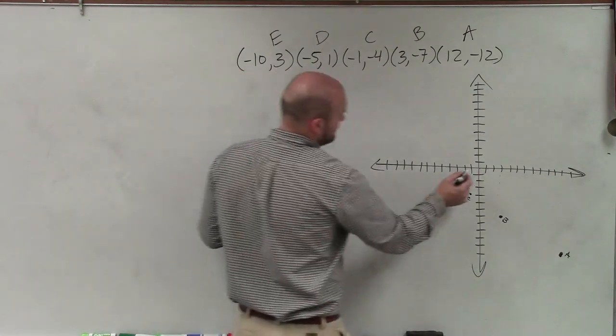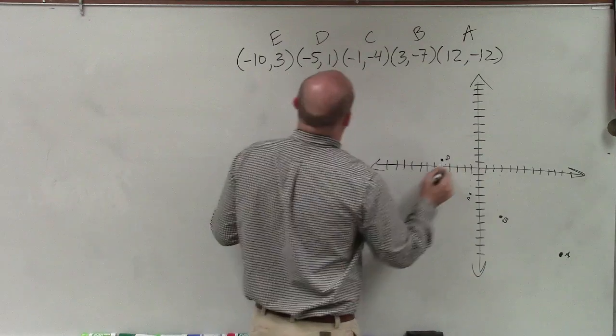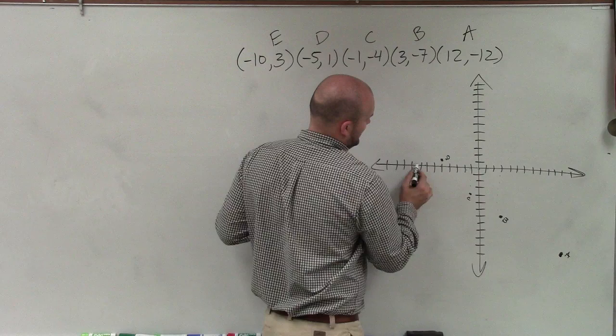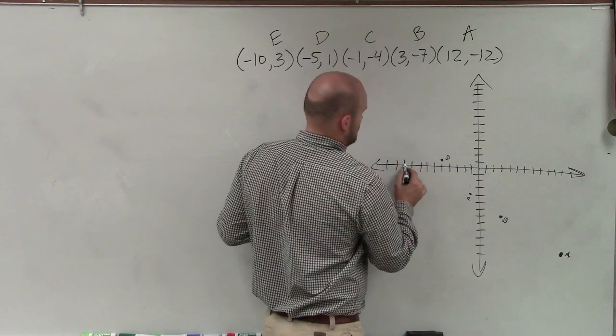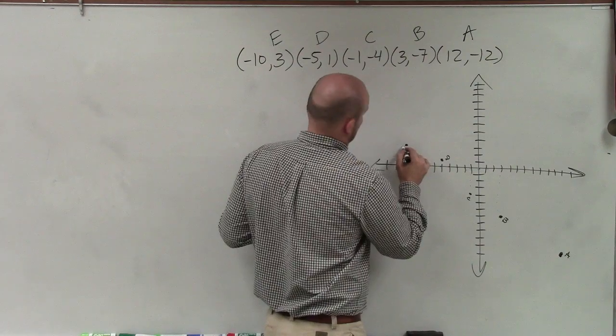I can do c, negative 1 comma negative 4. Let's see, d is negative 5 comma 1. And then I have e, negative 10 comma 3.